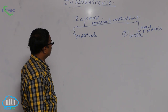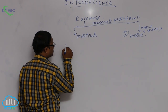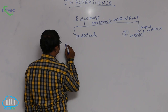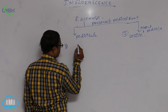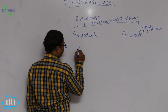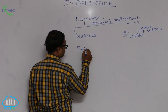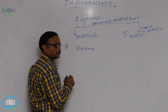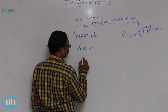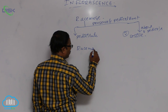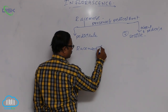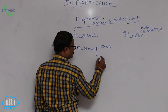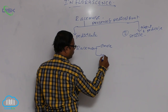Pedicillate racymose inflorescence is of five types generally. The first one is racyme, which is again two types: first is simple, and second is compound.